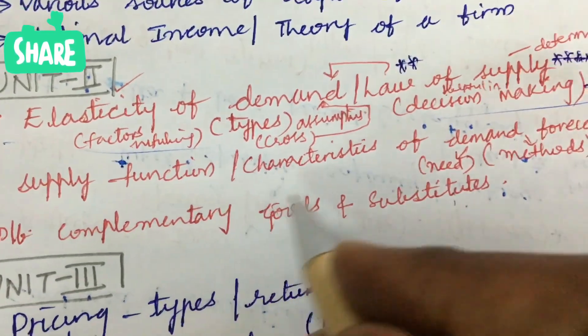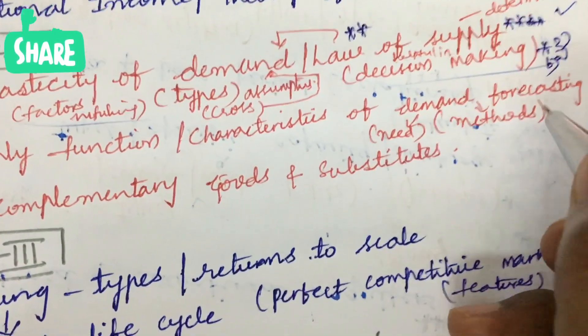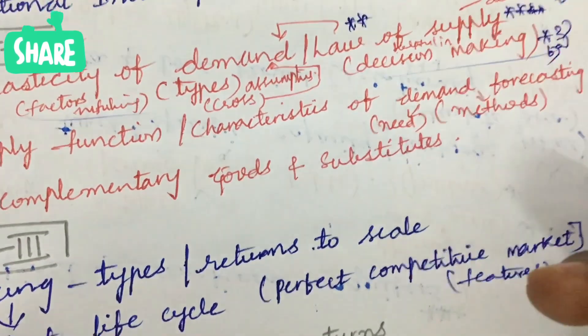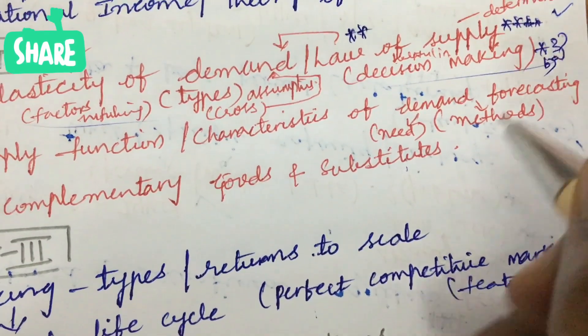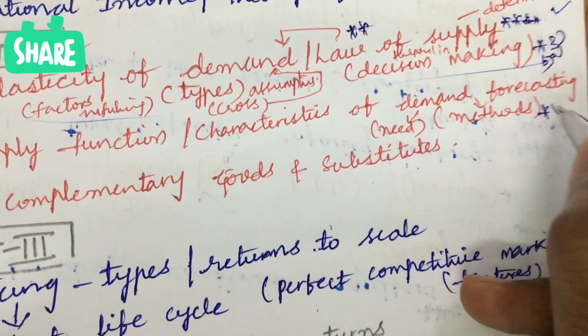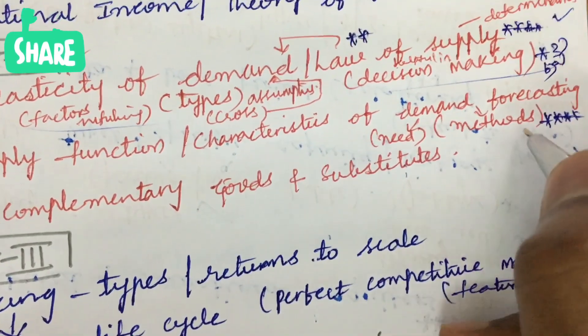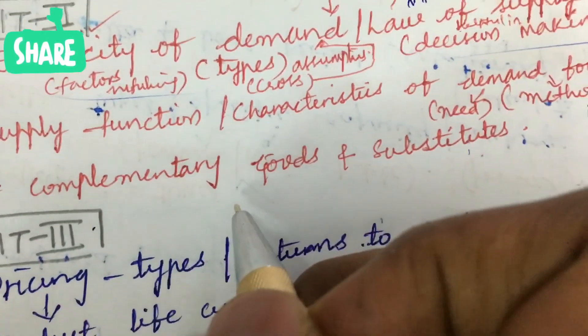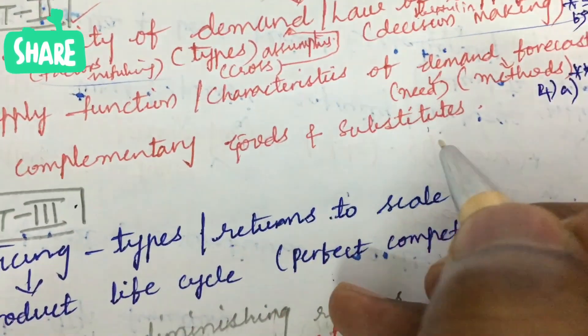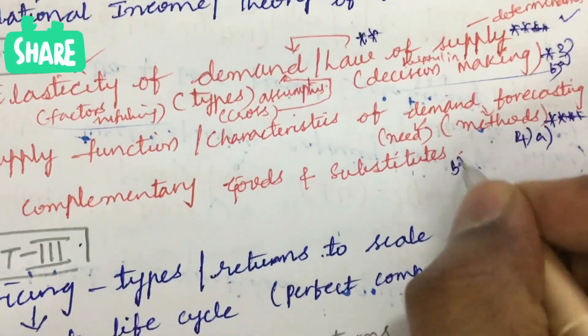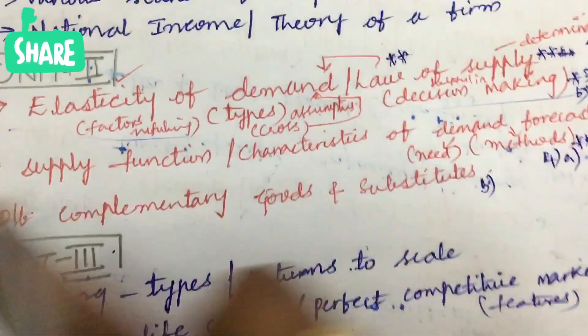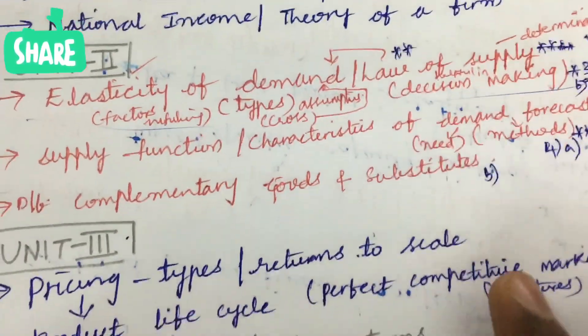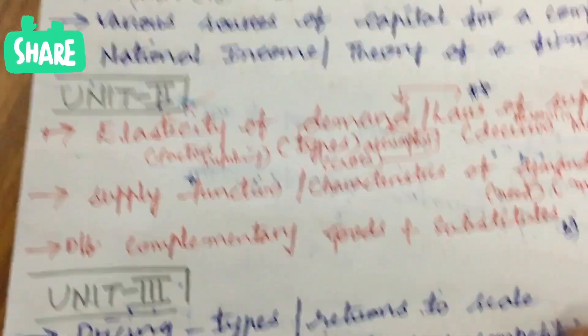Define supply function as well as the characteristics of demand forecasting and needs of demand forecasting. Sometimes they ask the different methods of demand forecasting. This is also one of the sure-shot questions which may be asked for A, as well as the difference between complementary goods and substitutes may be the B question. The second unit is very short and sweet. Whichever topics I have written here are going to come for this time, for sure, sure-shot questions.